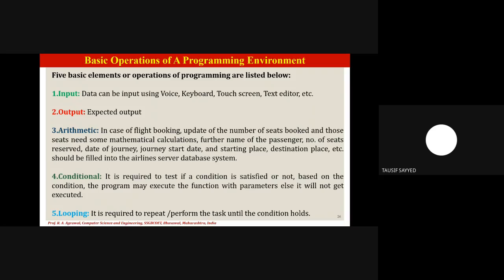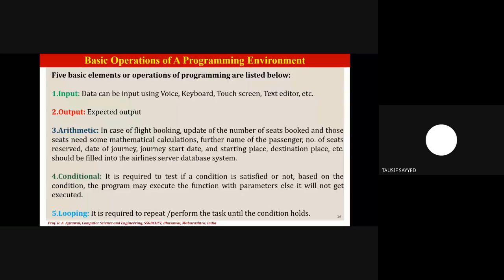Every program needs some input. Input can be given via voice, keyboard, touch screen, text editor, facial recognition, fingerprint, and many other techniques available in today's technology. After giving input to the system, it processes that input and produces a certain amount of output. If the output matches the criteria, it is a successful code; otherwise, changes must be made to get the desired output.